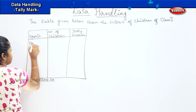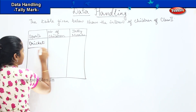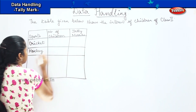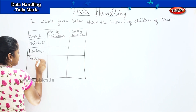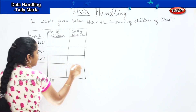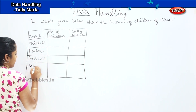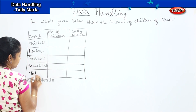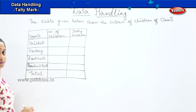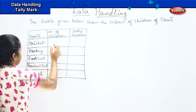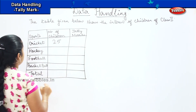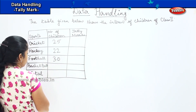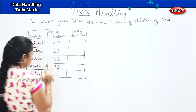The first sport is cricket, the second sport is hockey, the third sport is football, the fourth sport is basketball. We will draw a last column as total to find out how many children there are in all. Say for example 25 kids like cricket, 22 children like hockey, 30 children like football, and 33 children like basketball.